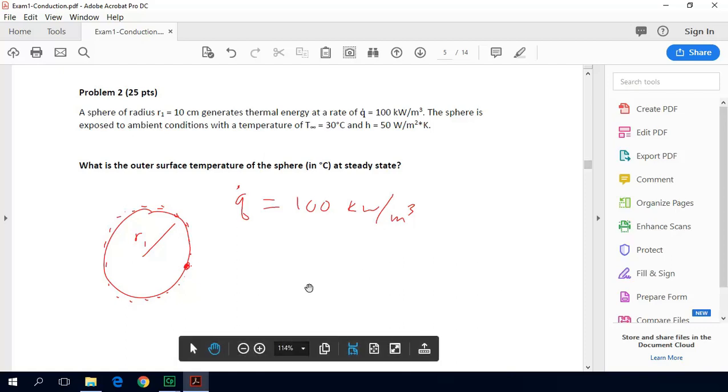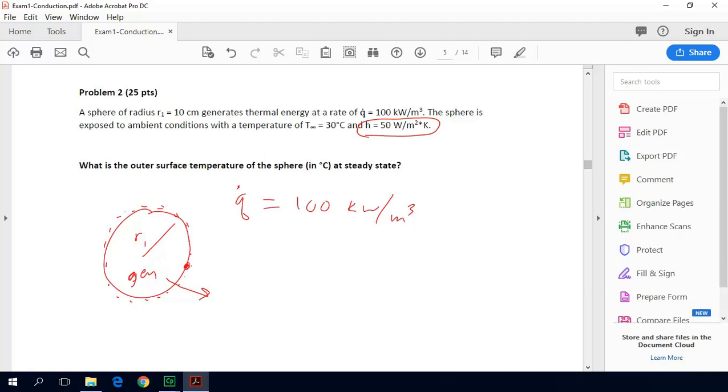While there may be a lot of interesting things happening within the sphere, we don't really care about that because we can do an energy balance around this outer shell and solve for that surface temperature. We know that there is generation happening in the sphere and that energy has to get out somehow. It's getting out purely by convection.